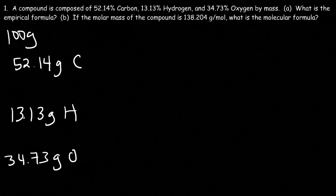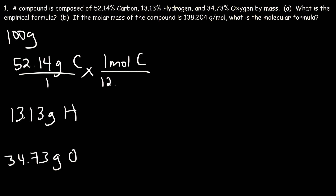Now what you want to do next is convert grams of carbon into moles. The atomic mass of carbon is 12.01 grams per mole. Set it up so that the unit grams will cancel. So let's divide 52.14 by 12.01 — you should get 4.34 moles of carbon.